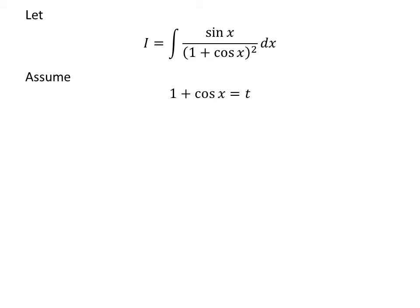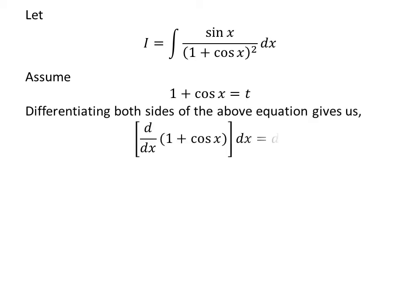We will apply the substitution method to solve the integral. Let us assume 1 plus cosine x is equal to t. Taking differential of both sides gives us the derivative of 1 plus cosine x with respect to x times differential of x is equal to differential of t.